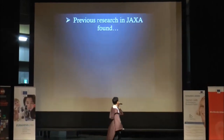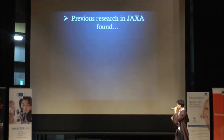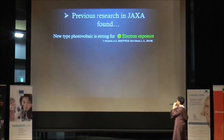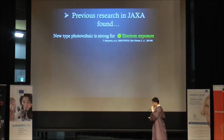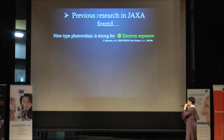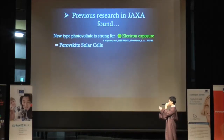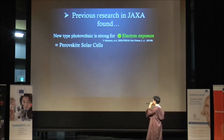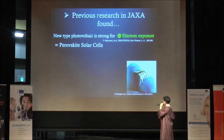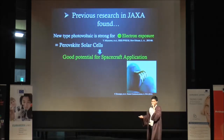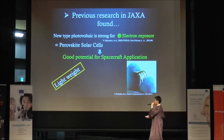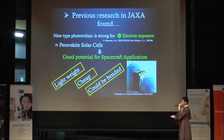I'm going to talk about previous research in JAXA. Previous research in JAXA found that there is a new type of photovoltaic which is strong for electron exposure. As I mentioned, electron is one of the space radiation particles. This new type of photovoltaic is called perovskite solar cells. Because of its strength against electron exposure, it has good potential for spacecraft application. It also has features of being lightweight, cheap, and could be bent, as shown in this picture.